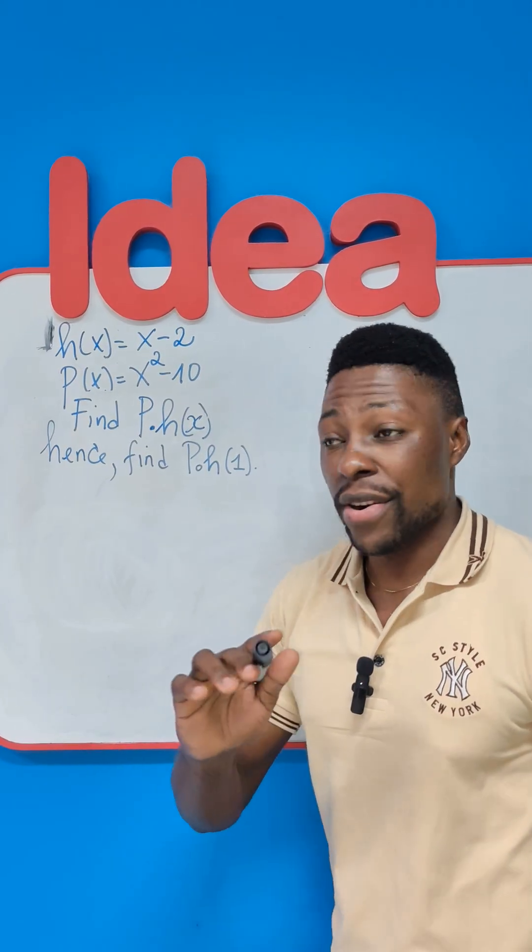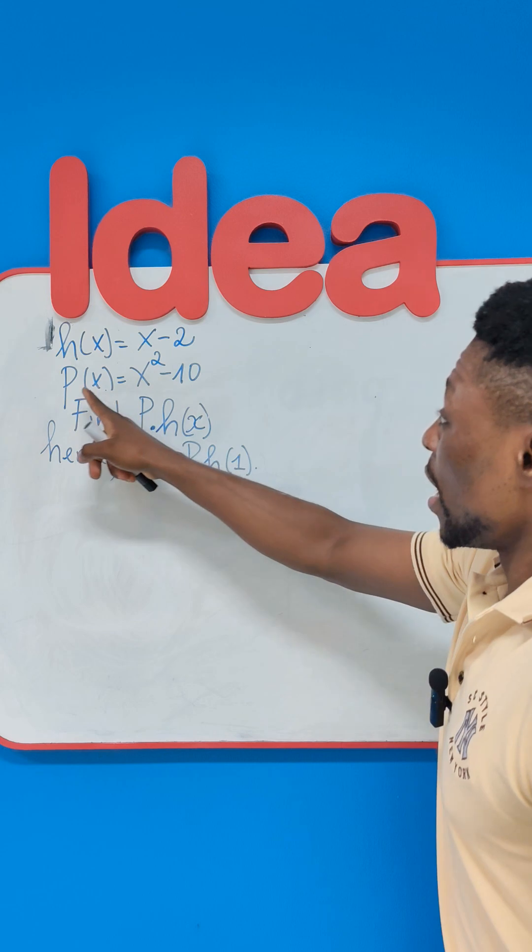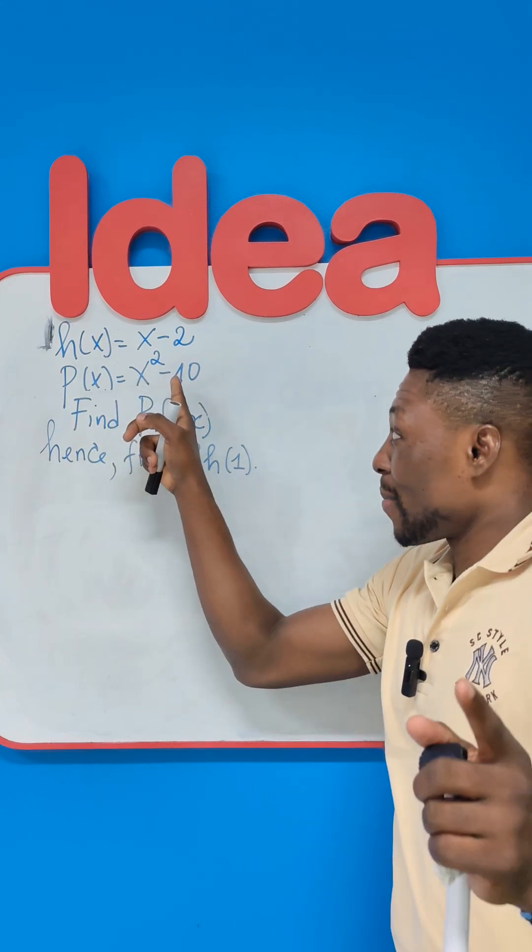Tomorrow will be better. H of X is X minus 2. P of X is X squared minus 10.